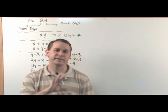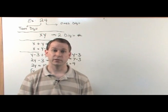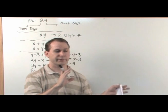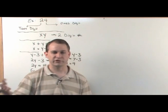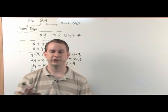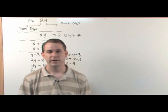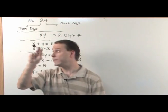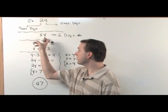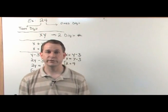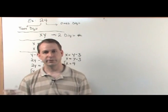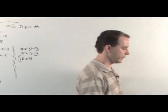With these digit problems — whether you're given a two-digit or three-digit number with some relationship between digits — the pattern is the same: write down your digits, write down the relations between your digits, solve the system, and then construct your final number.